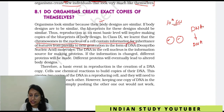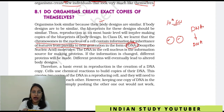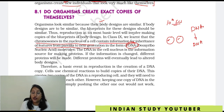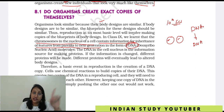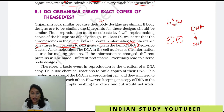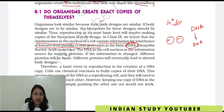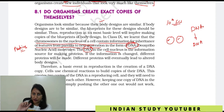DNA is a molecule — Deoxyribonucleic acid. The DNA in the cell nucleus is the information source for making proteins. It helps to make proteins. If this information is changed, different proteins will be made. Different proteins will eventually lead to altered body design.